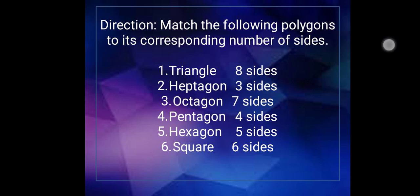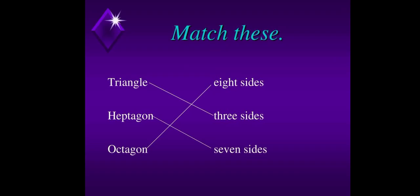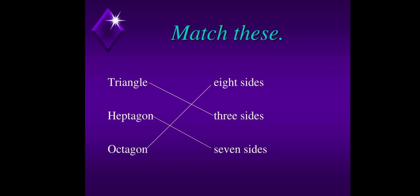After answering it, this is the correct answer. Triangle with three sides, heptagon with seven sides, octagon with eight sides, pentagon with five sides, hexagon with six sides, square with four sides.